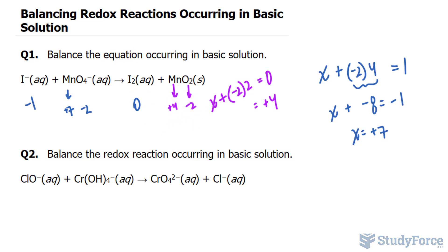In step number 2, we have to find out what's being oxidized and what's being reduced, and we can tell from these oxidation states. Starting over here, we go from negative 1 to 0. We're actually becoming more positive, so we're losing electrons.